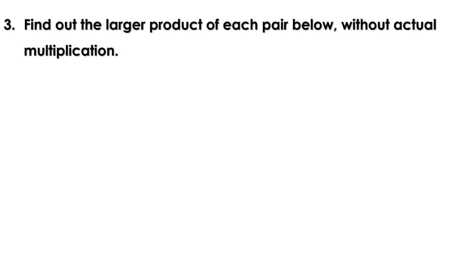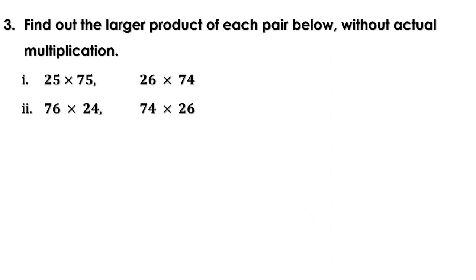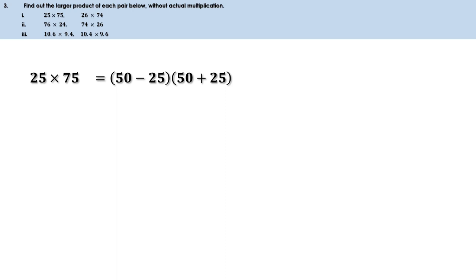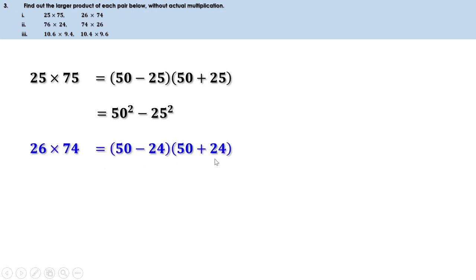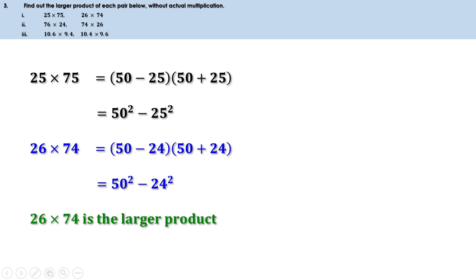Third problem: find the larger product of each pair without actual multiplication. First pair: 25 × 75 vs 26 × 74. 25 × 75 = (50 - 25)(50 + 25) = 50² - 25². And 26 × 74 = (50 - 24)(50 + 24) = 50² - 24². Since 24² is less than 25², a smaller quantity is subtracted in the second expression. Therefore 26 × 74 is the larger product.